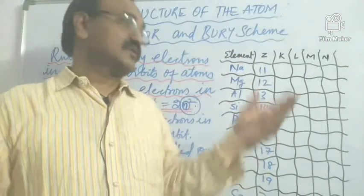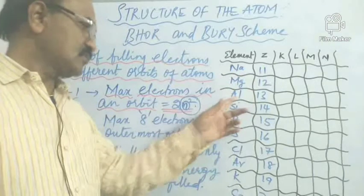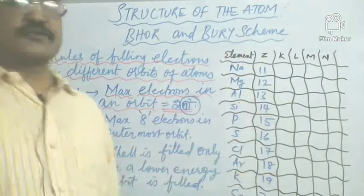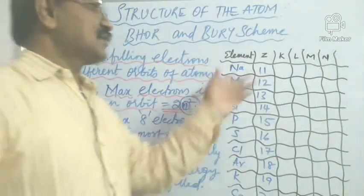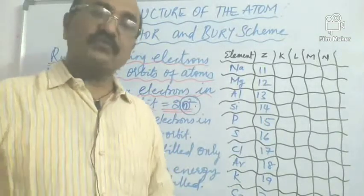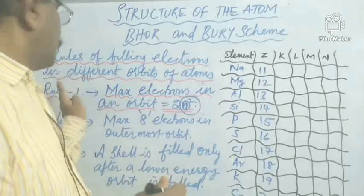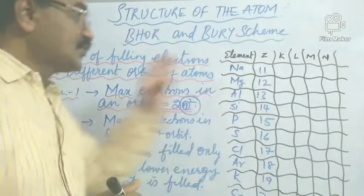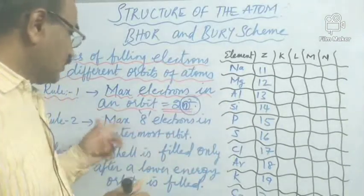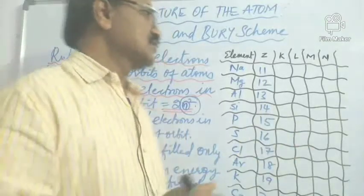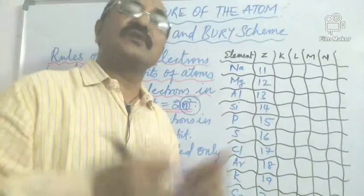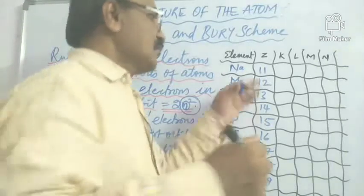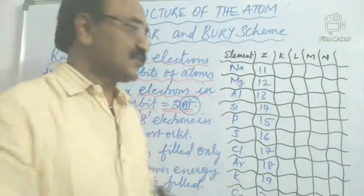What are these elements? Sodium, magnesium, aluminum, silicon, phosphorus, sulfur, chlorine, argon, plus potassium and calcium — with their respective atomic numbers. Now we will see how the electrons are filling. We will follow Bohr-Bury's rule one and try to fill, and then at one point we will understand the utility of the second rule.